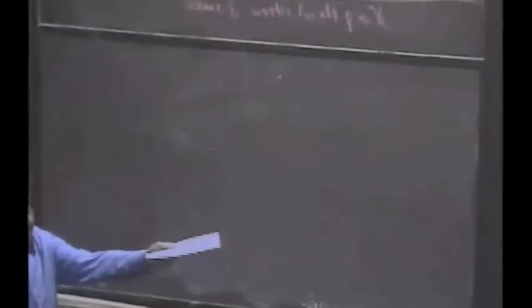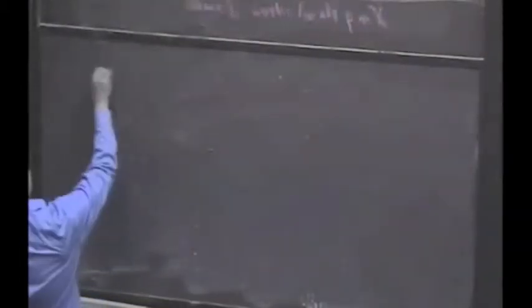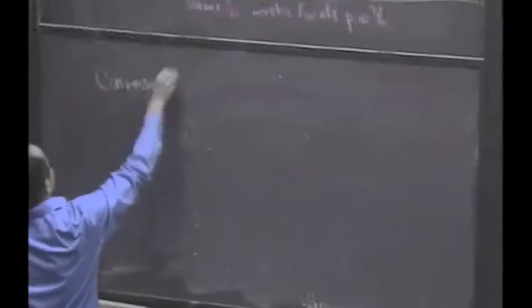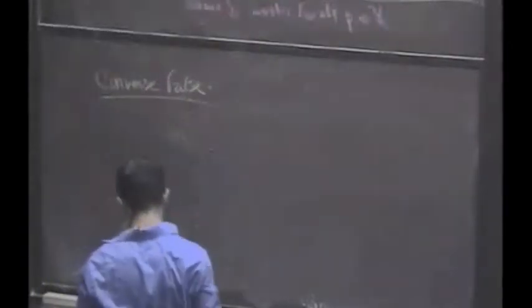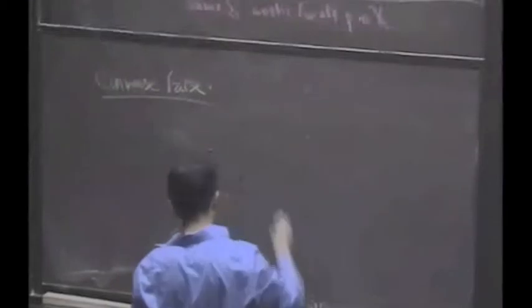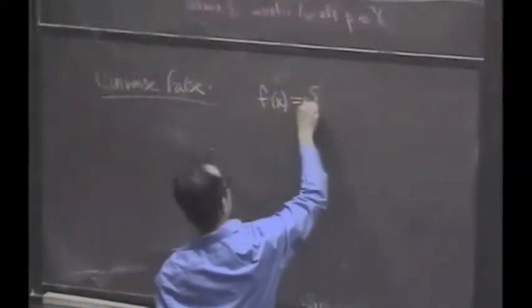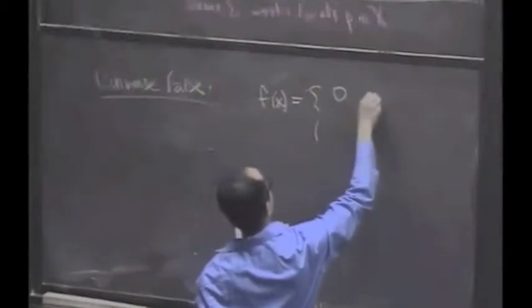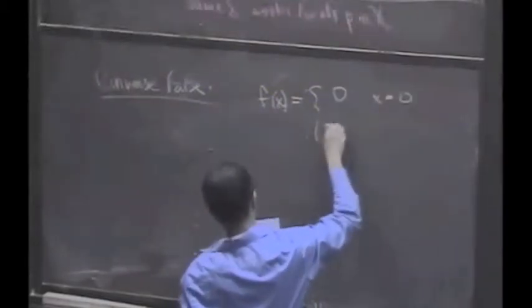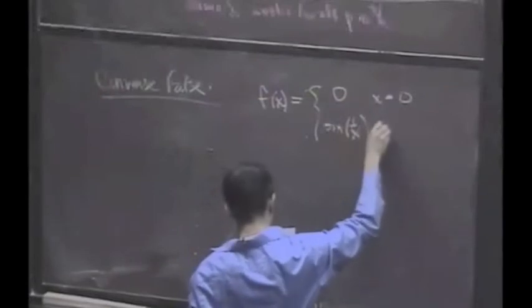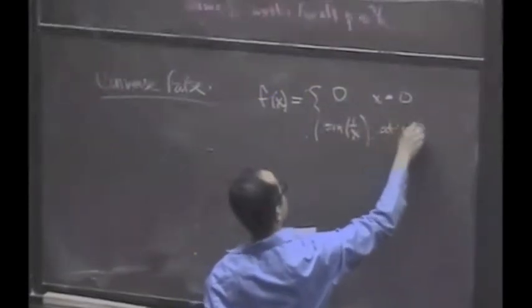You're probably wondering. You're probably thinking, I didn't state it as an if and only if, so it's probably not true. Converse is false. And I'll just show you an example. Here, F(X) equals, let's let it be 0 at X equals 0, and let's let it be sine of 1 over X for X not 0.